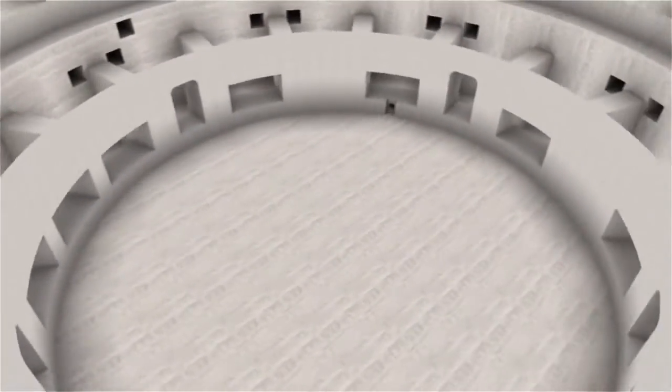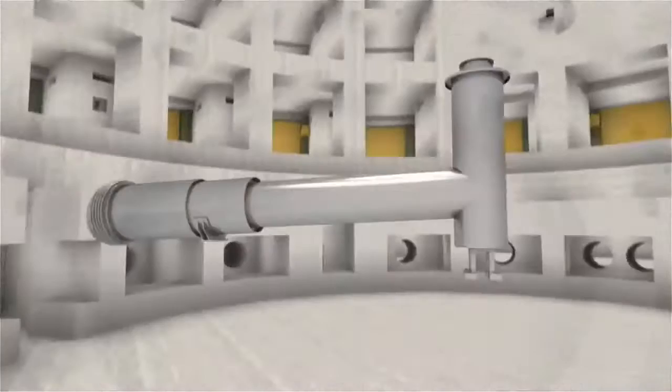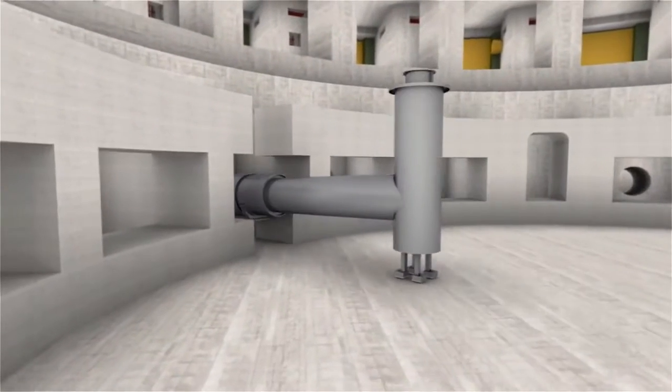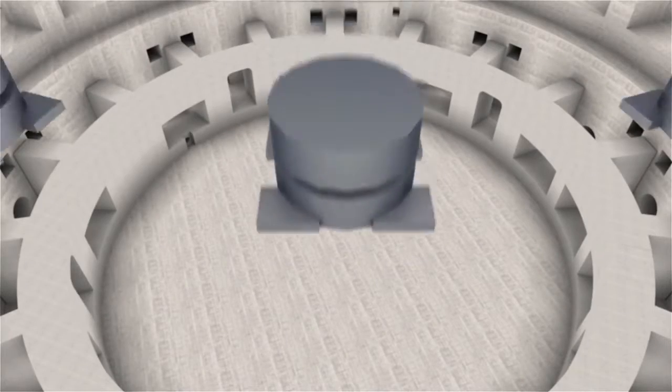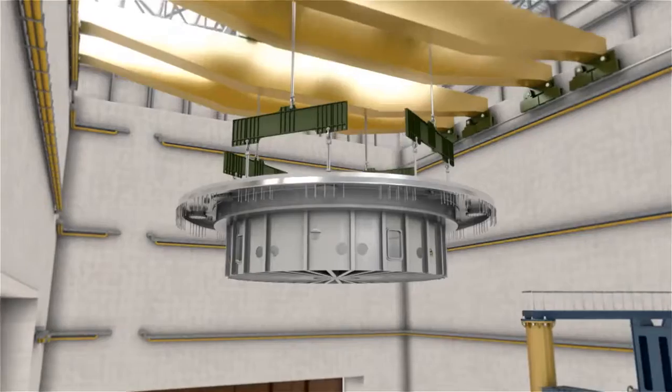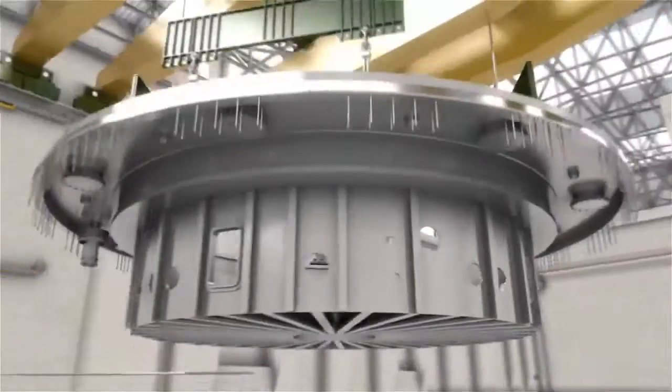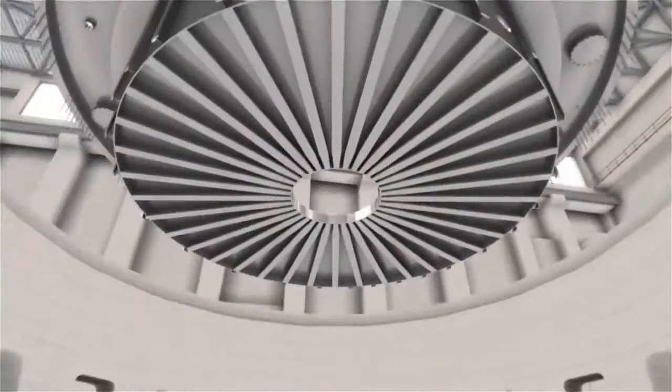First, the lower feeders for the ITER magnets will be put in place. Then, the base of the cryostat, the largest single component of the ITER machine, is lifted into position.